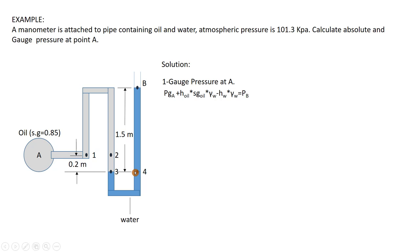So we go directly to point 4. When we go up, we have a column of water which is 1.5 meters, so the pressure decreases — I put a negative sign: height of water × gamma_water. This equals pressure at point B. That's why I write this manometer equation.